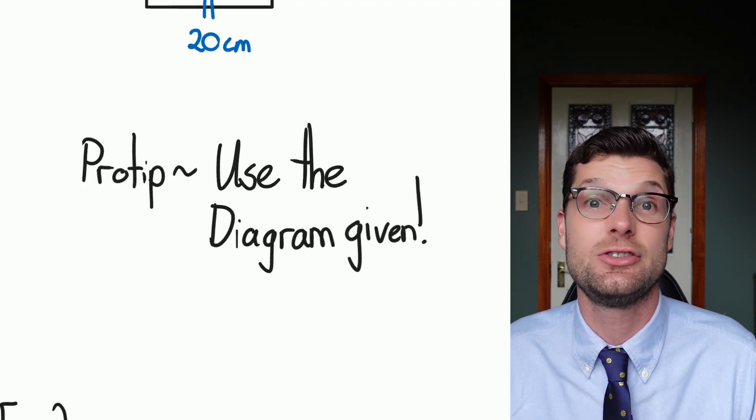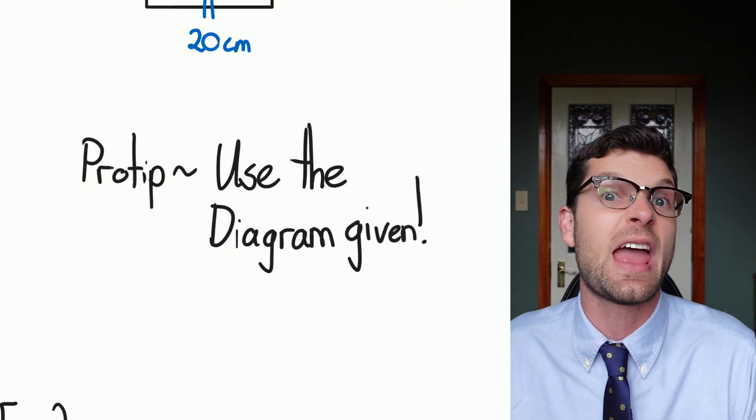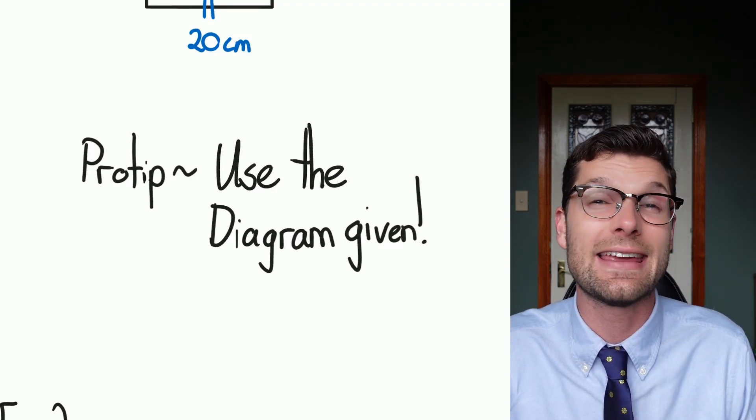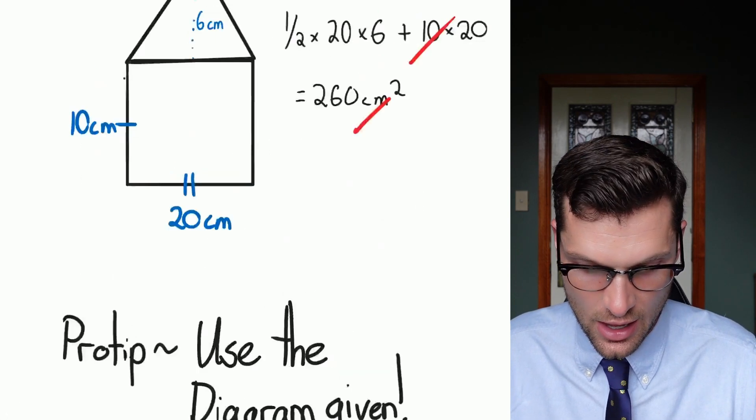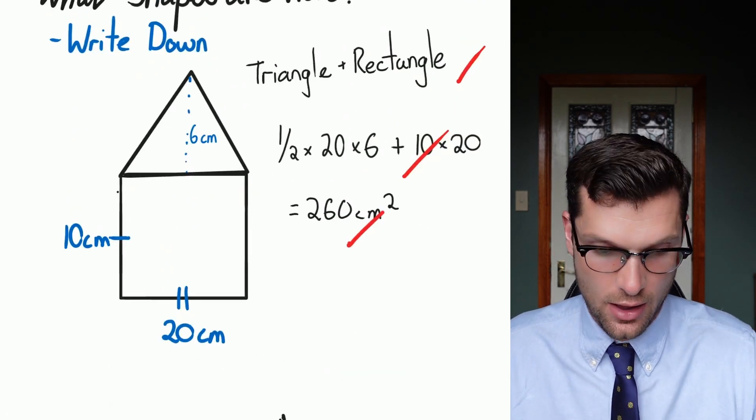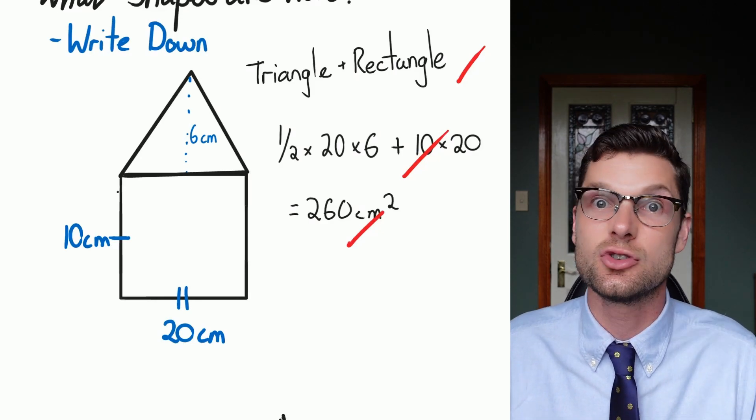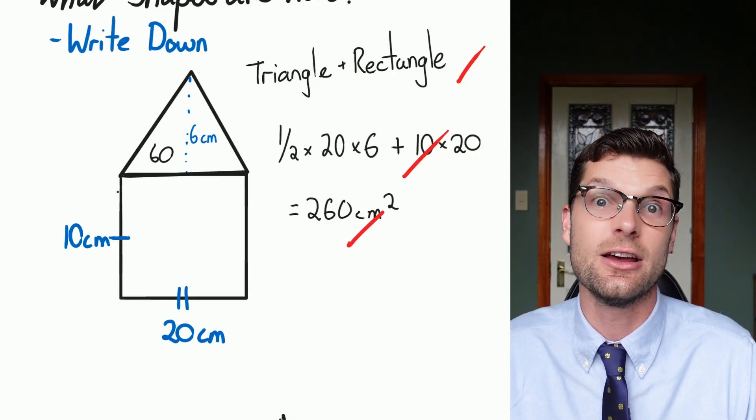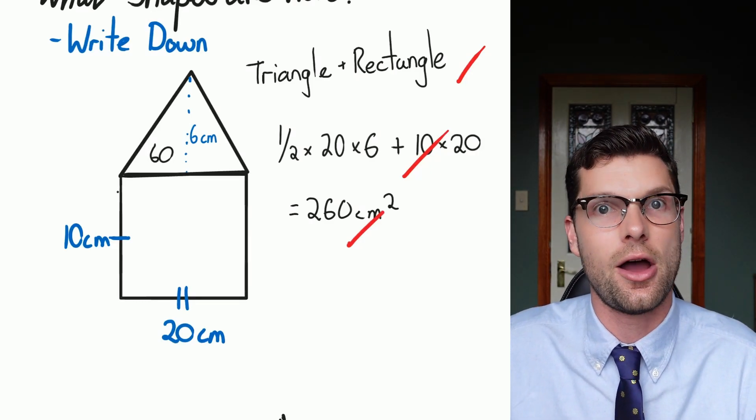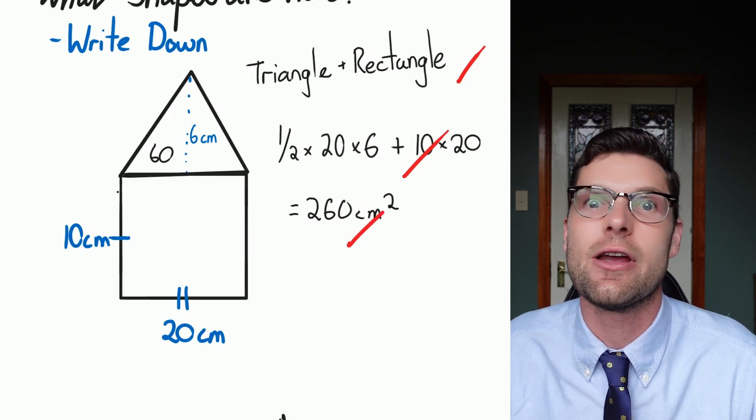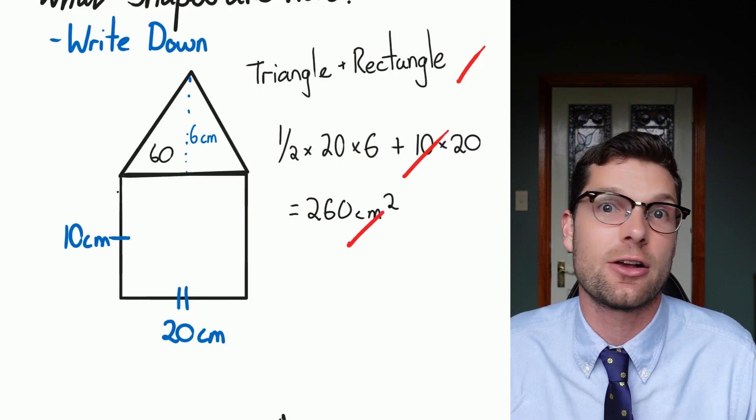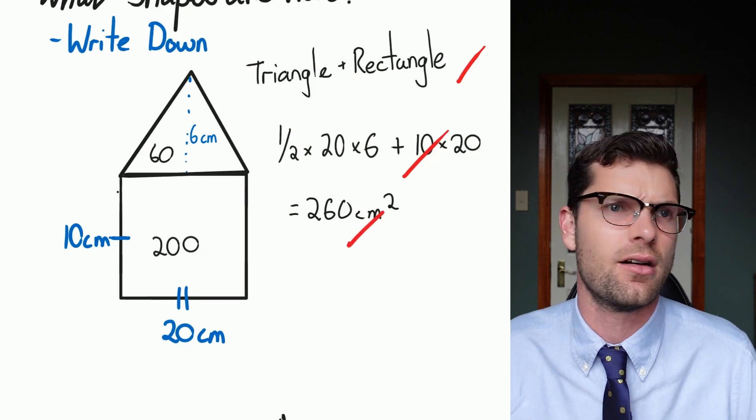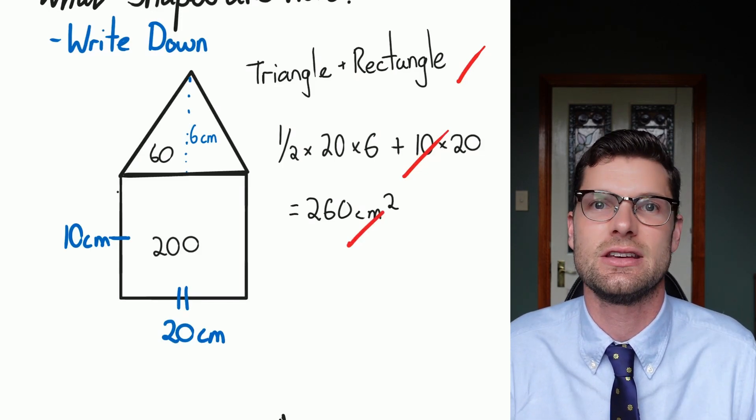So one of my big pro tips for this is please use the diagram that's been given to you. If you don't like doing the working in one step like I did that last time, I would highly recommend writing in your answer for each one as you go. So if I go back up to this one I knew that the area of the triangle is 60. 20 times 6 is 120 divided by 2. I would actually write 60 in there just so if you make a mistake down the line your teacher goes oh they've definitely worked out the area of that triangle. And then because that rectangle is 10 times 20 which would be 200, you can straight away say oh it's 200 plus 60, 260, full marks.